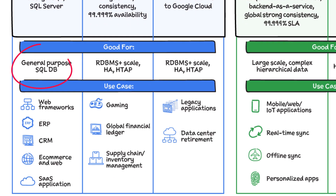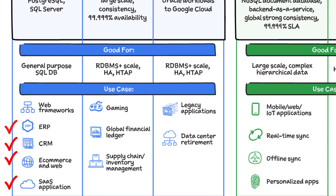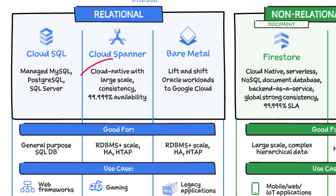For these reasons, Cloud SQL is best for general purpose web frameworks, products, CRMs, ERPs, SaaS, and e-commerce applications. Cloud Spanner is the only enterprise-grade globally distributed and strongly consistent database, which is built specifically to combine the benefits of relational database structure with non-relational horizontal scale.